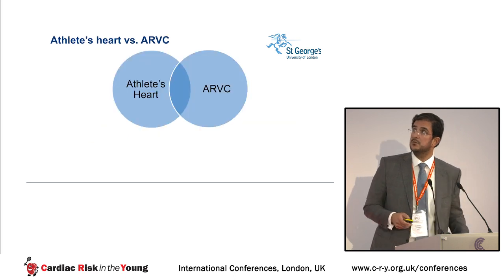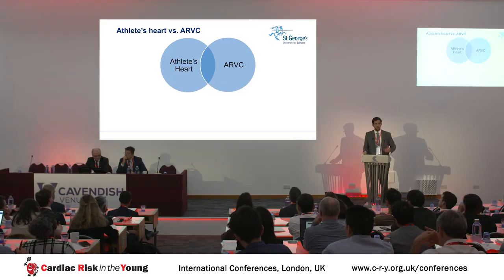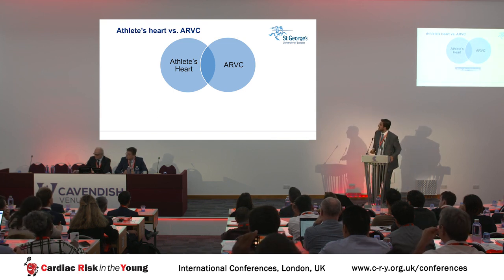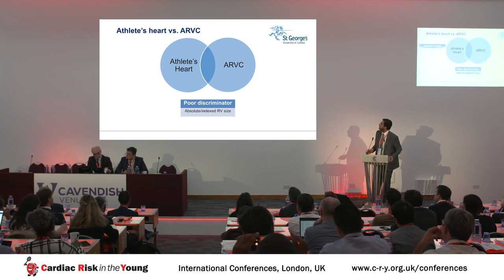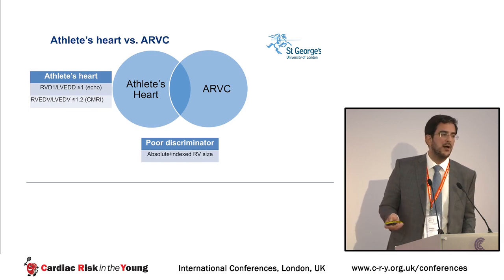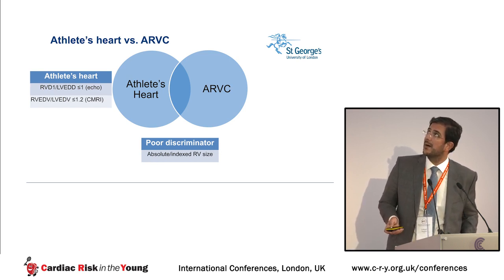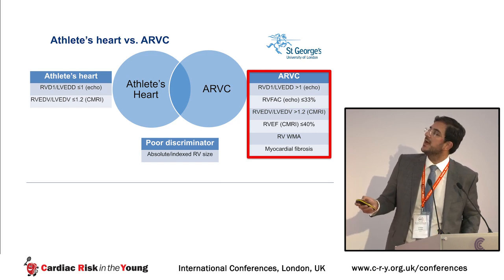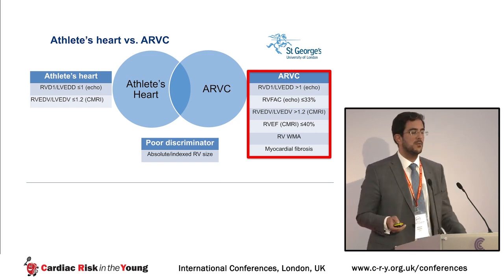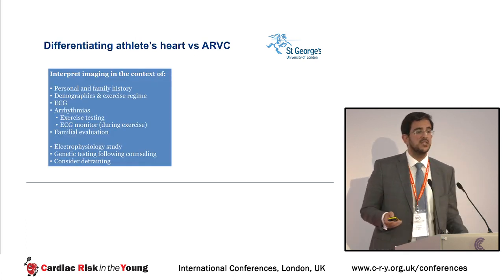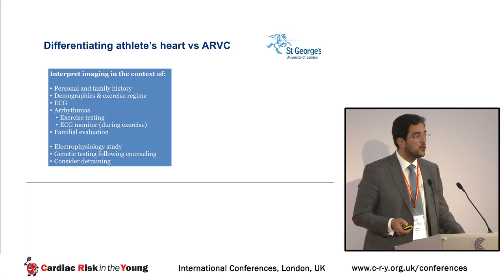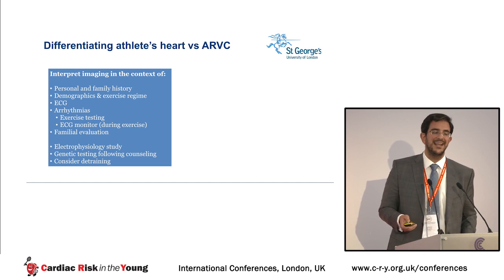To summarize the imaging criteria for differentiating athlete's heart from ARVC — remembering that 'A' also stands for arrhythmia, so exercise testing and Holter monitoring play important roles — absolute values are a poor discriminator. An RV-to-LV ratio on echocardiogram of ≤1 is probably normal; on MRI, ≤1.2. Concerning features include ratios above those thresholds, impaired ventricular function, and the presence of myocardial fibrosis and wall motion abnormalities.